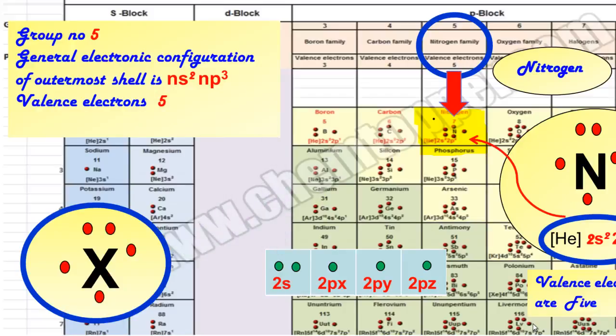This is the general Lewis dot symbol of all elements of Group 5.